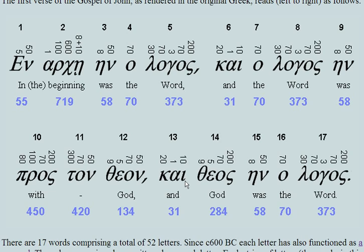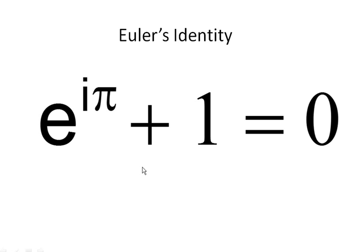The mathematical constant e had not even been thought of at that stage — it wasn't conceived until the 17th century by Leonhard Euler. The amazing thing is that these two mathematical constants have a unique relationship in Euler's identity, which contains both pi and e. So pi and e are very unique in mathematics. What on earth — how can this possibly be true?